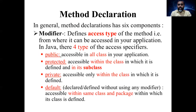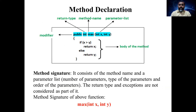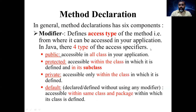A method declaration has six components. For example, I'll show a pictorial definition. I have declared a method called 'max' which has six components: modifier, return type, method name, parameter list, exception list, and body of the method. The first component is the modifier, which defines the access type of the method — how it can be accessed.